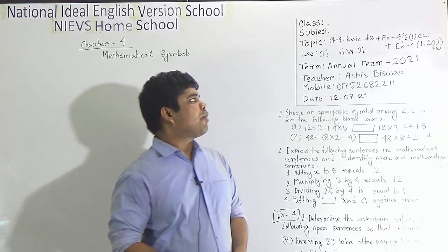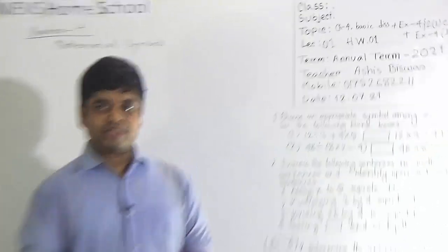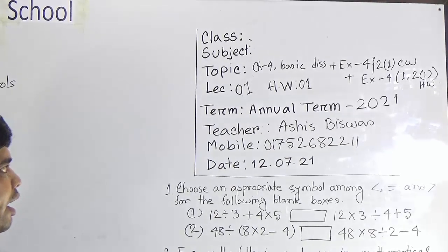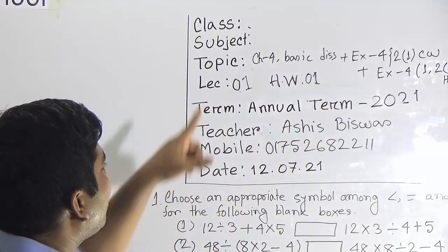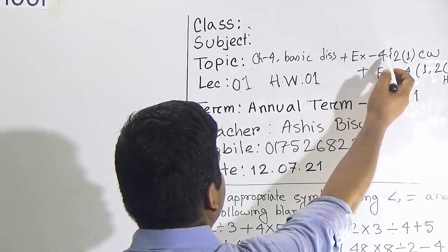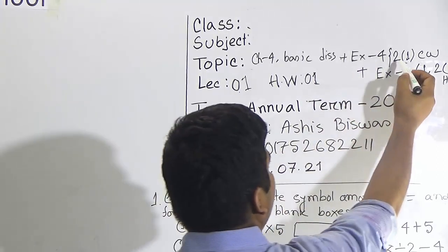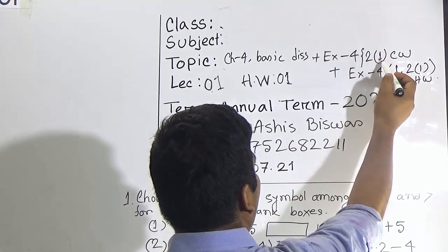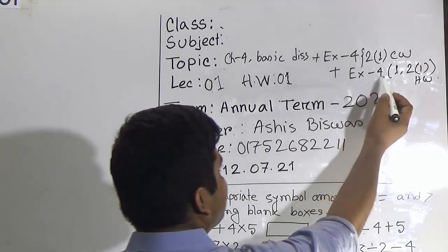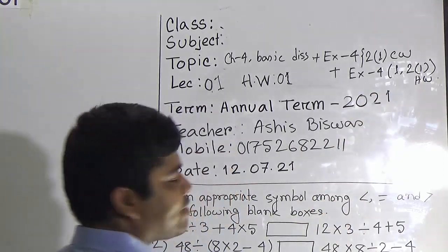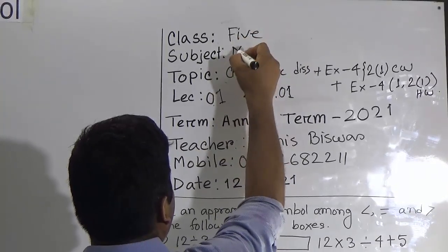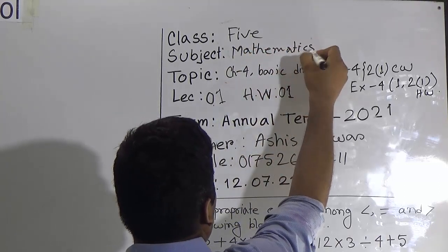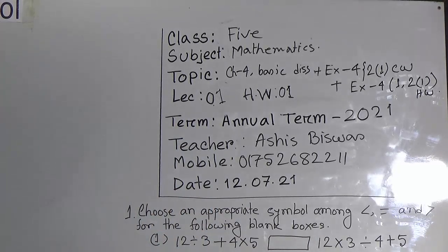My dear students, today is our first class of the half annual term examination 2021. Today is our lecture number 1 and HW number 1. Our today's topic is chapter 4, basic discussion, exercise 4. From exercise 4, we shall solve question number 2. From question 2, we shall solve number 1 as your CW, and exercise 4, question 1 and 2 sub-number 1 will be your HW. Your class is 5 and subject is mathematics.